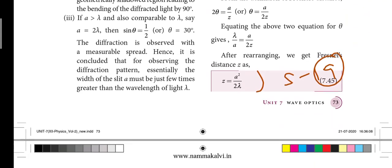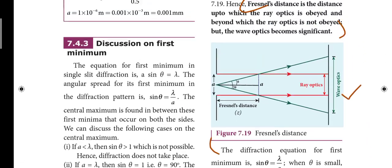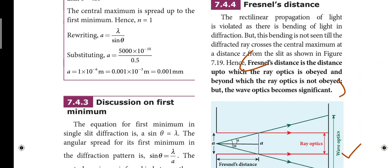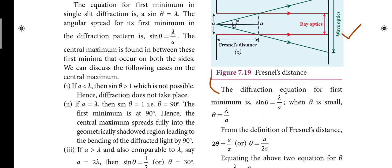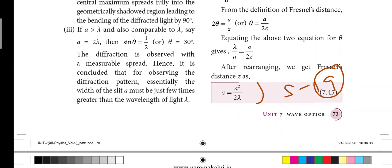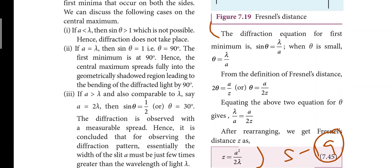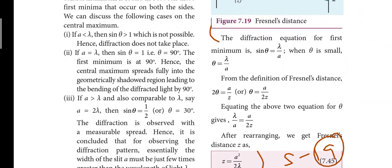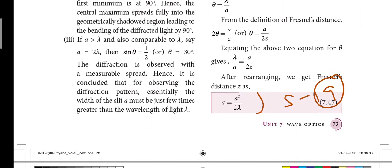Next, page number 73: Fresnel distance — that is the definition in black letters. Diagram — that is the third page. You have to write three marks. This is the nineteenth short answer. The key is the heading: Z is equal to A squared by 2 lambda. That is the nineteenth short answer.